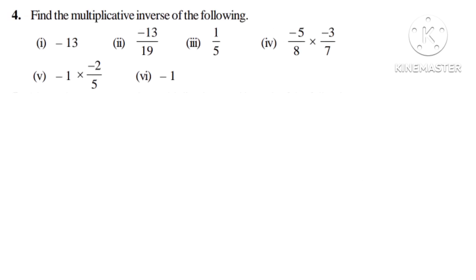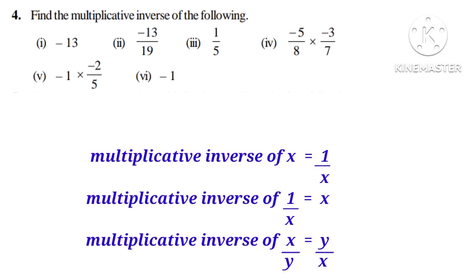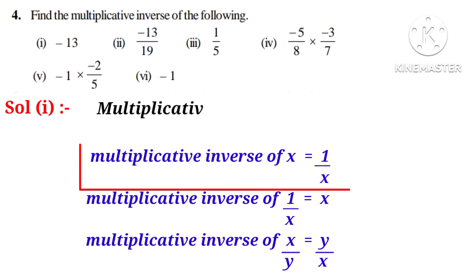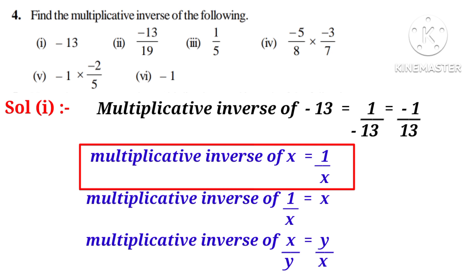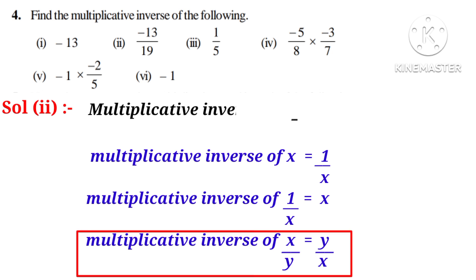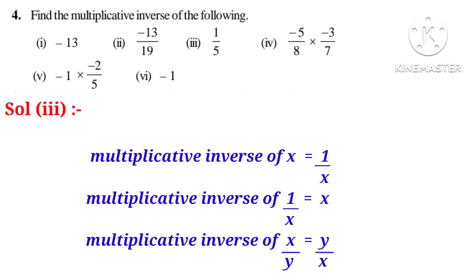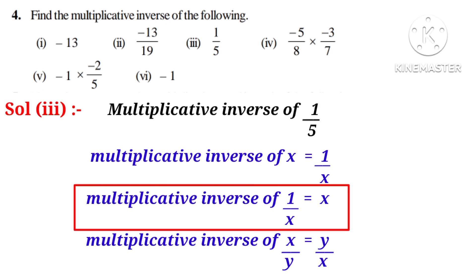Now let us do the fourth problem: find the multiplicative inverse of the following. Multiplicative inverse of x is 1 by x; of 1 by x is x; of x by y is y by x. Solution 1: multiplicative inverse of minus 13 is 1 by minus 13, which equals minus 1 by 13. Solution 2: multiplicative inverse of minus 13 by 19 is 19 by minus 13, which equals minus 19 by 13. Solution 3: multiplicative inverse of 1 by 5 is 5 by 1, which equals 5.